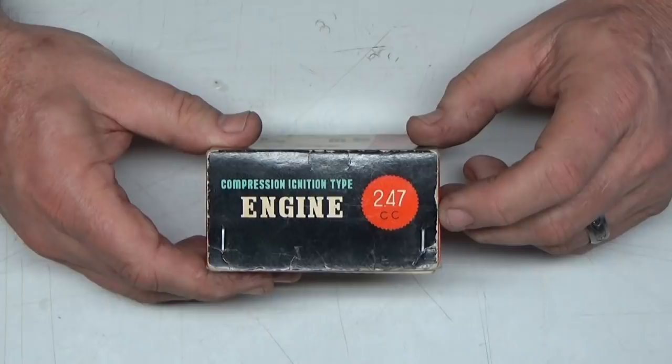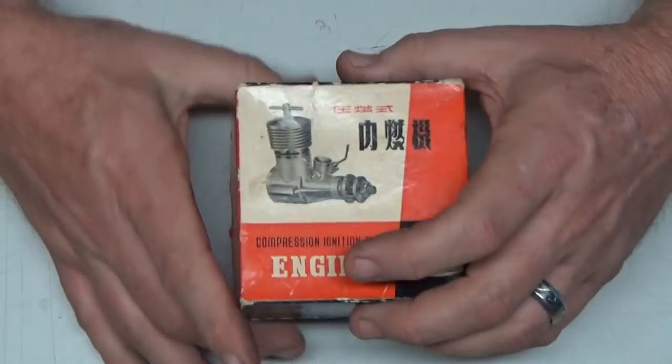This is a 2.47 cubic centimeter engine. Let's open this box and see what we have inside here.